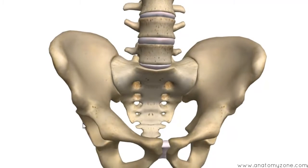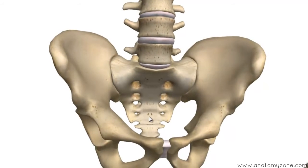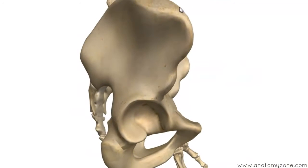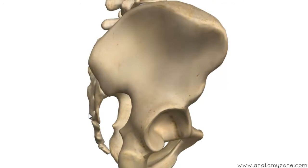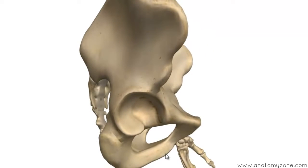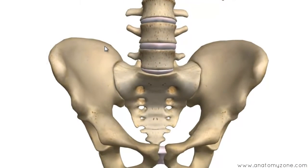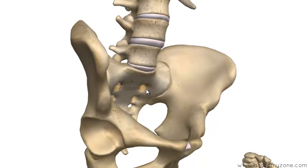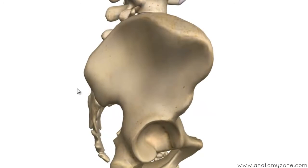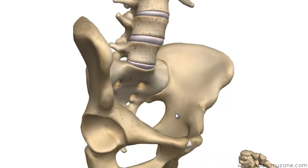The pelvis is separated into two regions. You've got the upper region — the superior part — which is called the false pelvis, also called the greater pelvis. And you've got the lower part, the inferior part, which is called the true pelvis or the lesser pelvis. The upper part is called the false pelvis because it's often regarded as part of the abdominal cavity rather than the pelvic cavity. The lower part is the true pelvis because it contains the actual pelvic cavity.